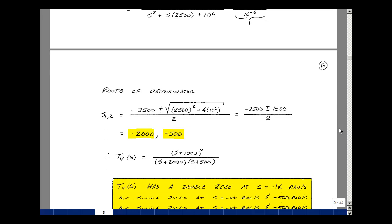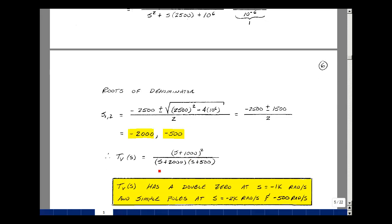My voltage transfer function then is s plus 1,000 squared over s plus 2,000 times s plus 500. I have a double zero at s equals minus 1,000 radians per second, and I have two simple poles, one at minus 2,000 radians per second and one at minus 500 radians per second. And these are some network functions of one and two port circuits.